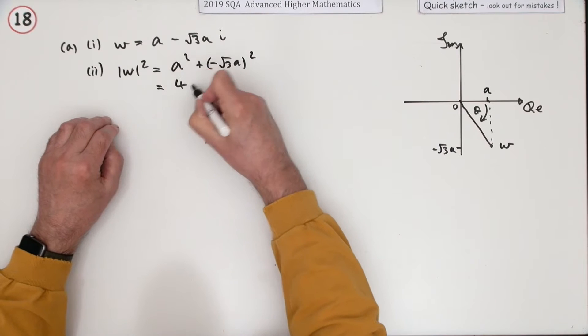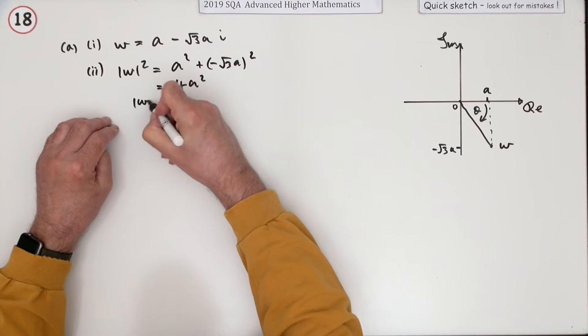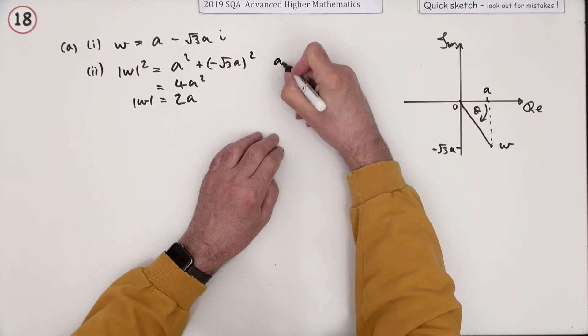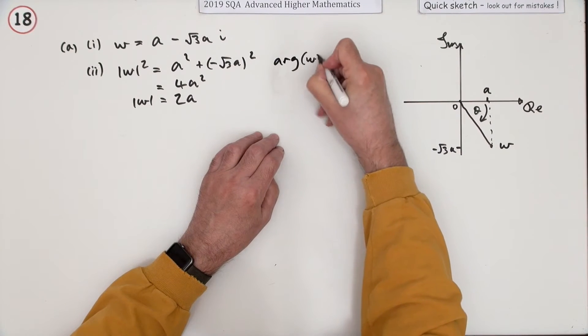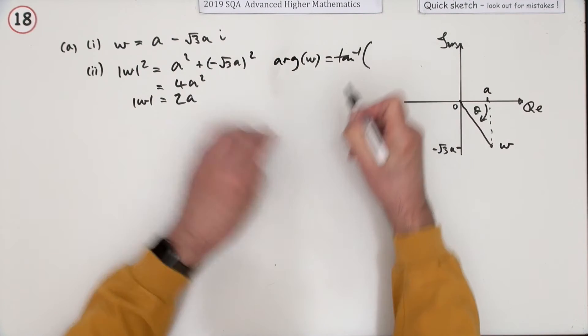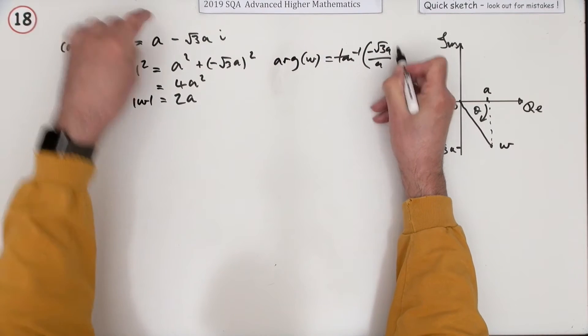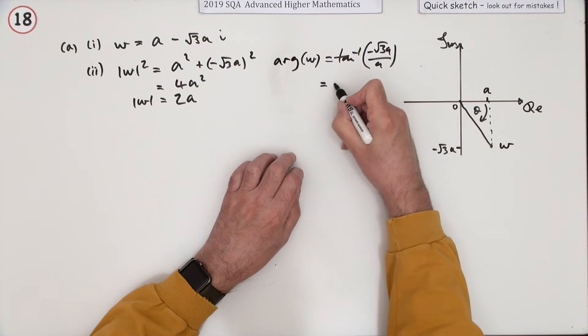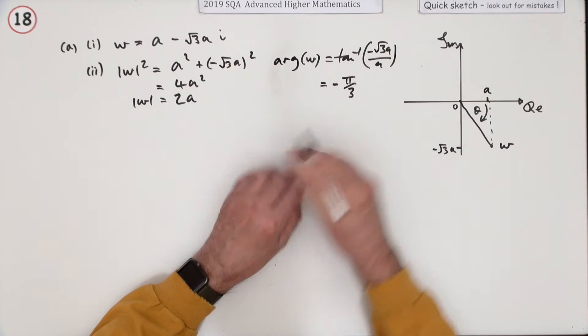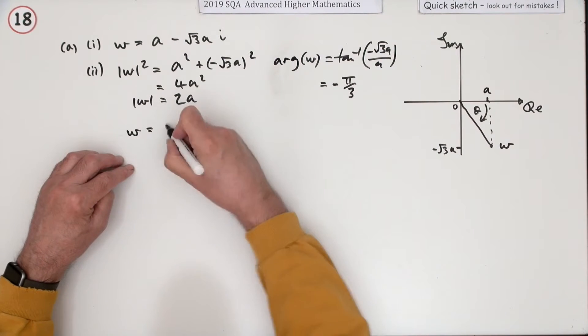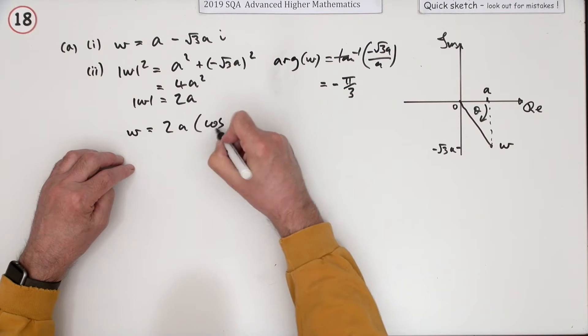So that comes to 4a squared, so the modulus is going to be 2a. And the argument of w is going to be inverse tan of negative root 3 over a, which you know is negative pi upon 3.